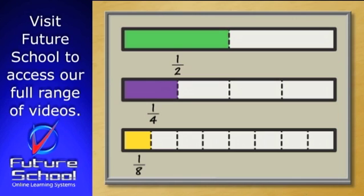Remember, each rectangle is exactly the same size. Now what do you notice about the size of the parts? If you said the size of the parts gets smaller as the number of parts gets bigger, you're correct. Looking at the shaded parts, we can see that one quarter is smaller than one half, and one eighth is smaller than both one quarter and one half.